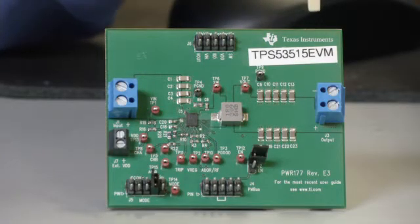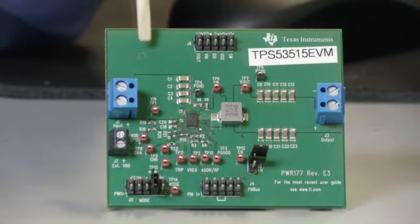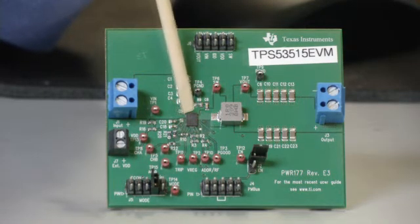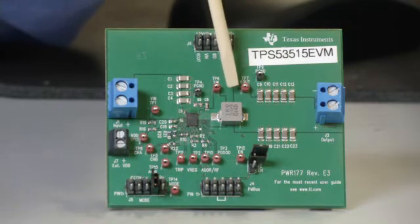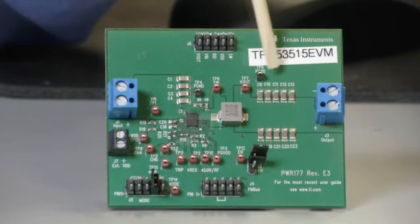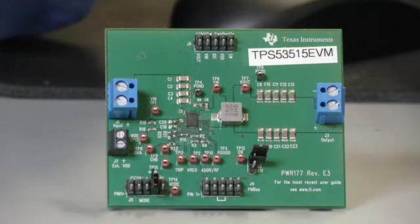What you see here is the TPS53515 DCAP3 mode buck converter, web-orderable EVM, you will find on the TI eStore. This is the TPS53515 DCAP3 mode converter with its 7x7 output inductor powering the load. These are the only multi-layer ceramic capacitors you will need for the output. The complete power solution takes up only 135 square millimeters of PCB area and requires only 33 total components.